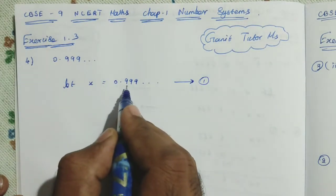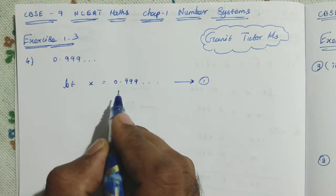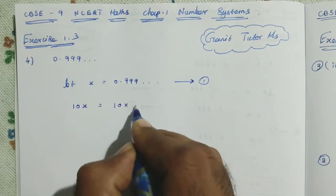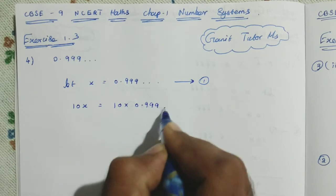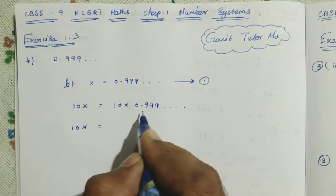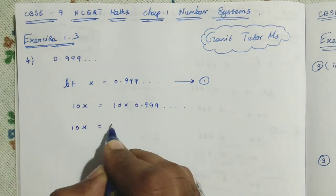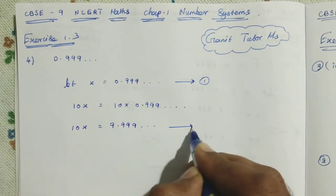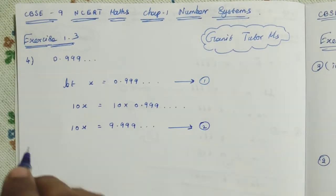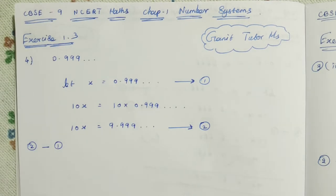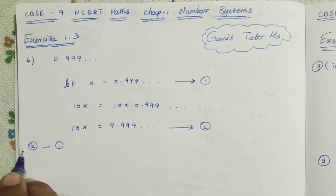Then, here the only one digit is repeating, 9. So, you just multiply 10 on both sides. So, 10X equals 10 into 0.999, etc. Then, 10X equal to 9.999, etc. You mark this as equation number 2.